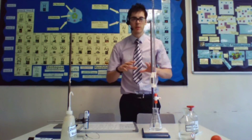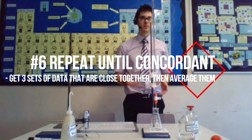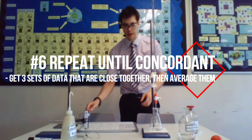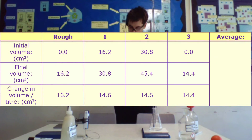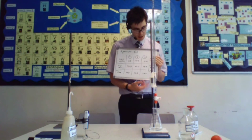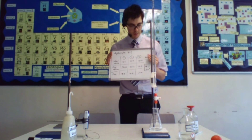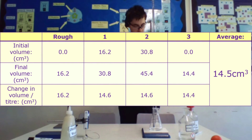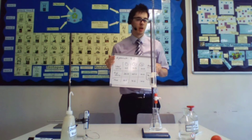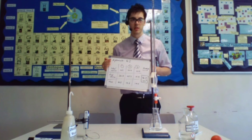Now you've done that you need to repeat it three times, which I've already done. By doing that you get three sets of concordant data — three bits of data that are really close to each other. Take the average, and that is the total amount of acid needed to neutralise our 10 cm³ of sodium hydroxide.